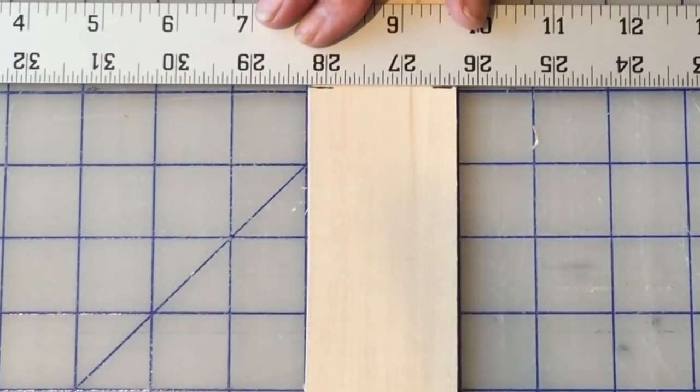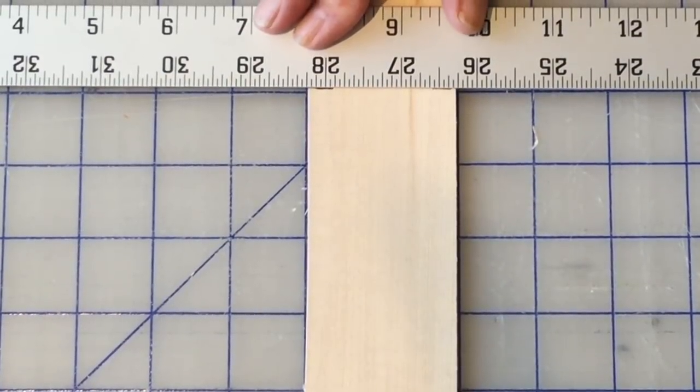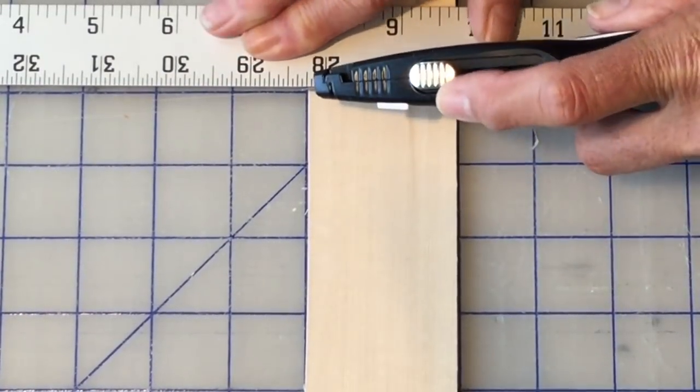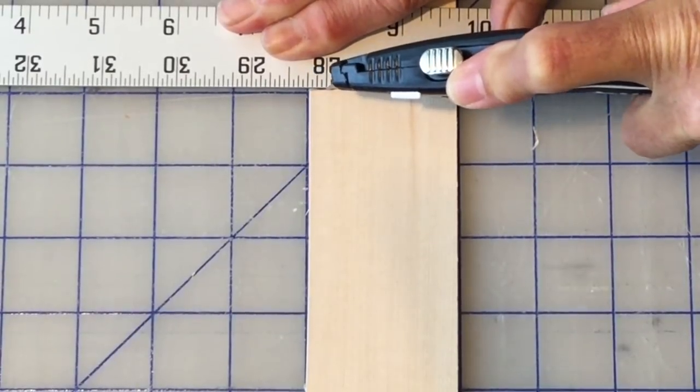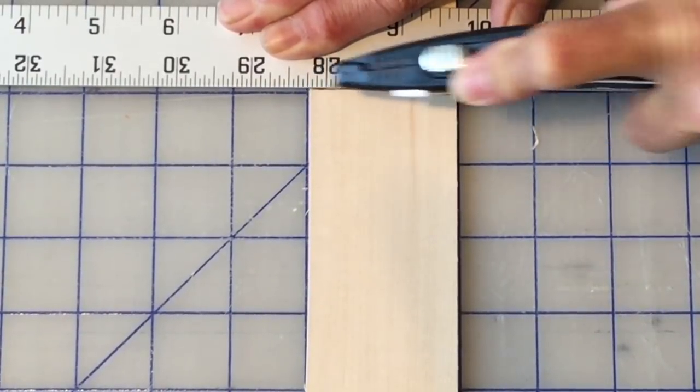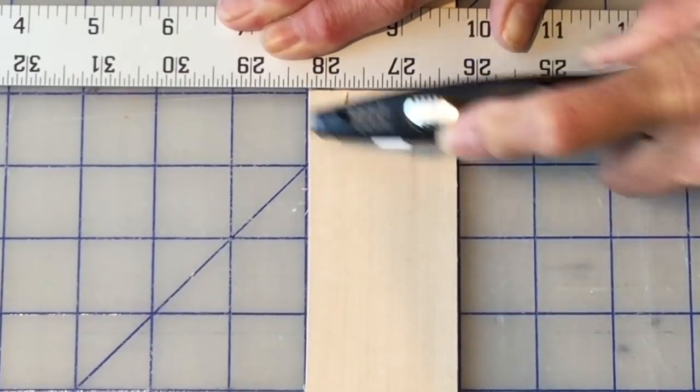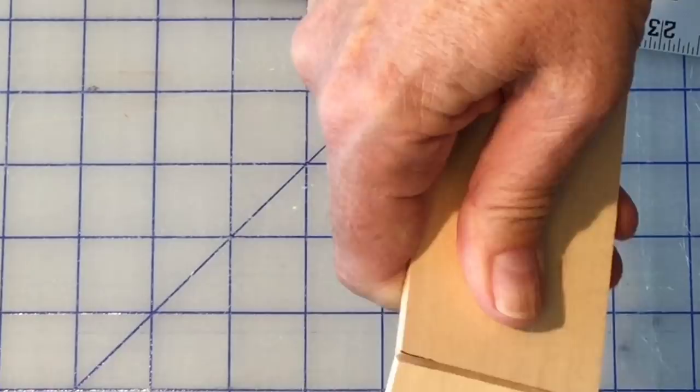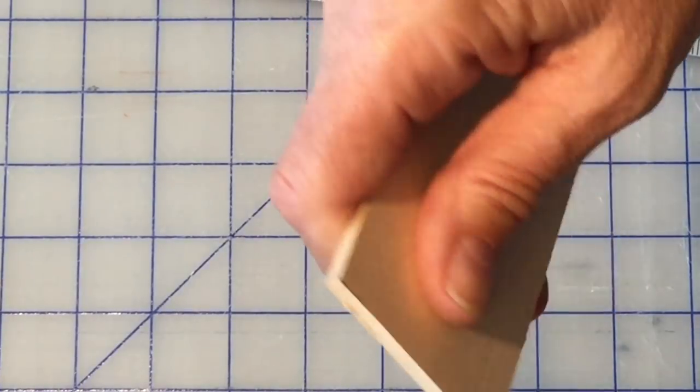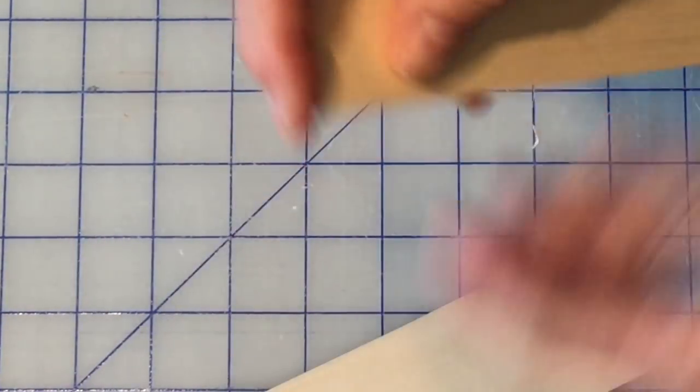And again line up your lines. And again we're going cross grain this time, so we want to make several lines with the utility knife. And that works just fine.